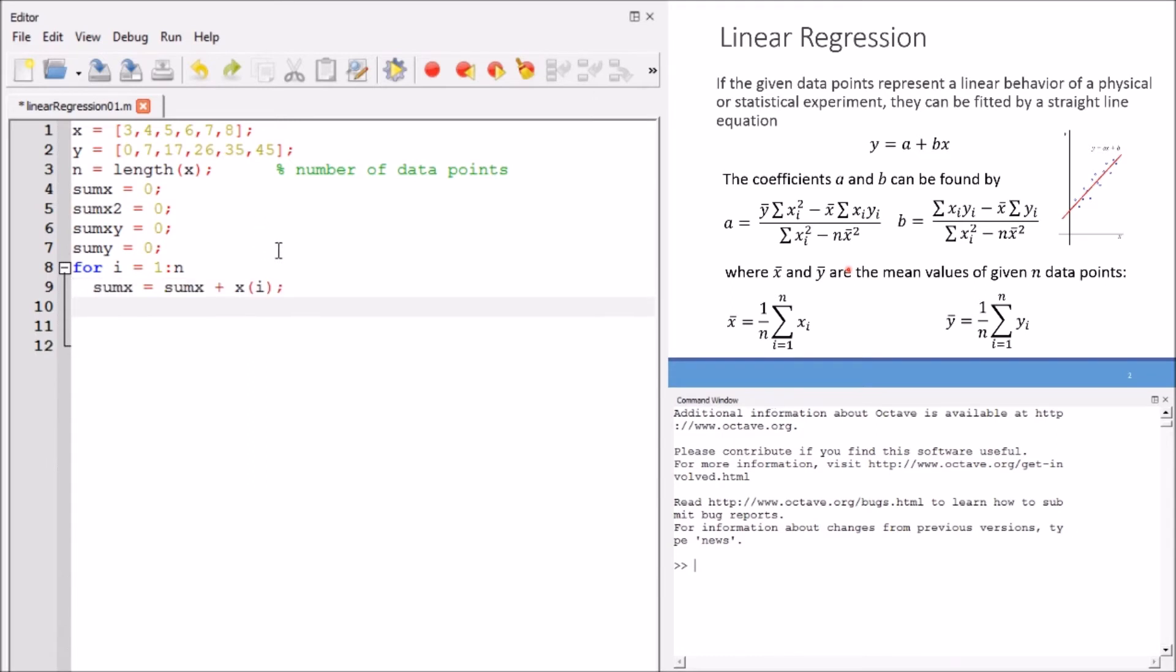Now, first, we get the summation of x. We call it sum x. Sum x equals sum x plus xi. This is summation of xi values. Also, sum x 2 indicates the square values. Here, we have the sum of the squares of x values, as you see here. This is the summation of squared x values here in the numerator and denominator, first term, and we have in the denominator of the b equation.